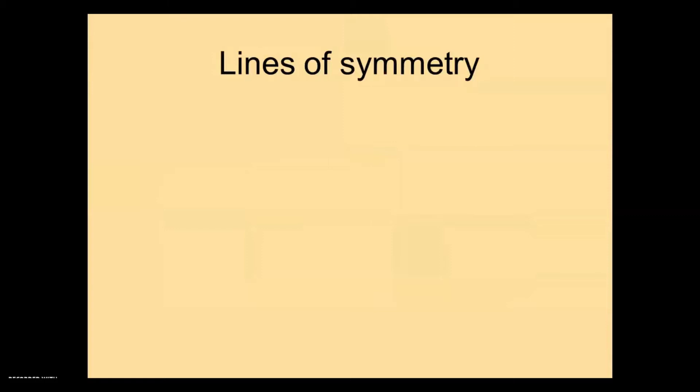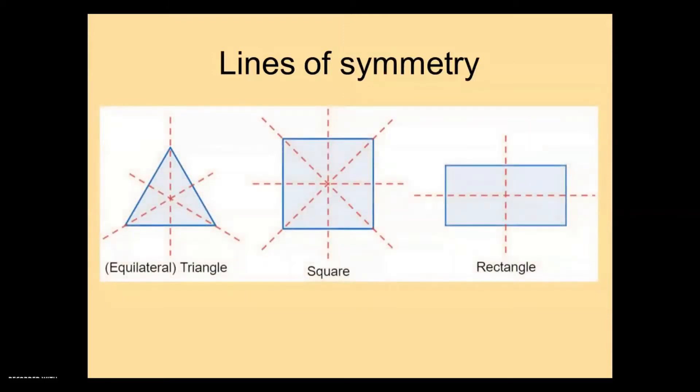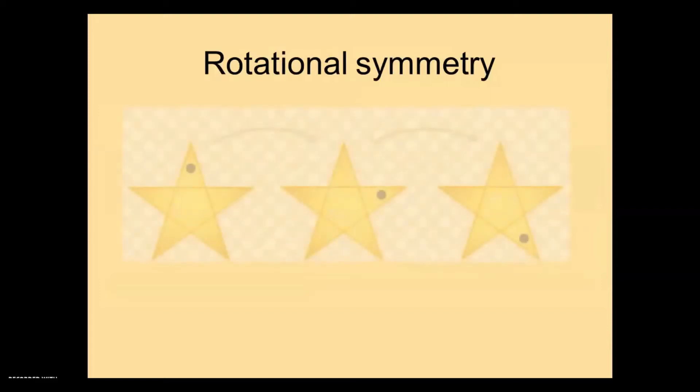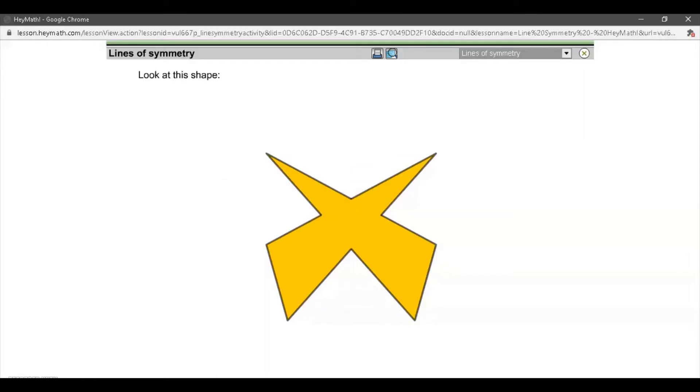Today we are learning about lines of symmetry and also rotational symmetry. Look at this shape. Let's flip the left half along the line. The right half is a reflection of the left half. This shape is symmetrical.